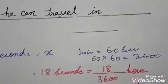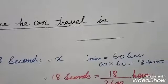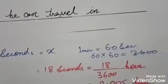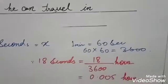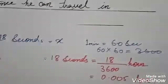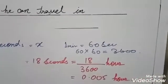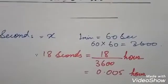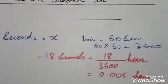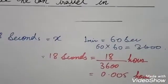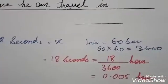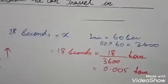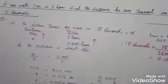One minute has 60 seconds, and one hour has 60 minutes, so 60 multiplied by 60 equals 3600 seconds. Now, 18 seconds divided by 3600 equals 0.005 hours. So the time for distance x is 0.005 hours.